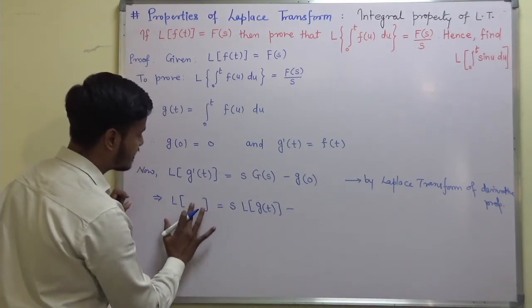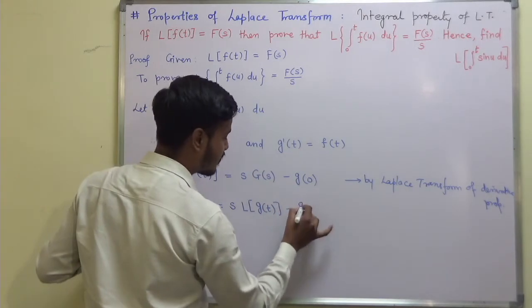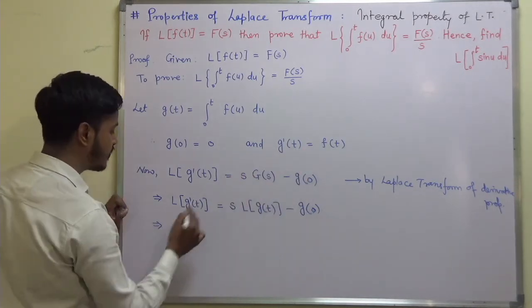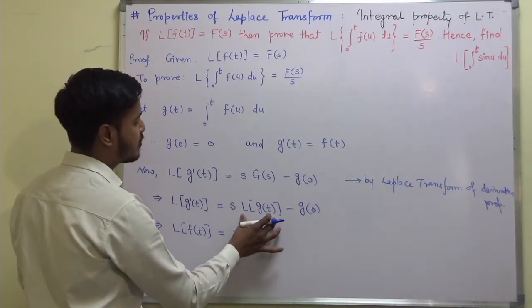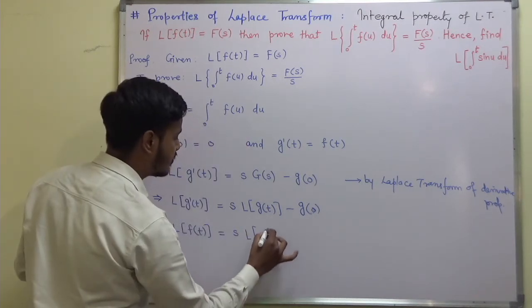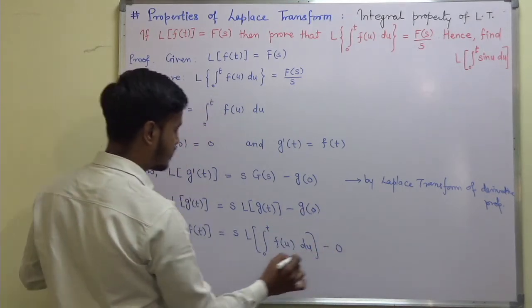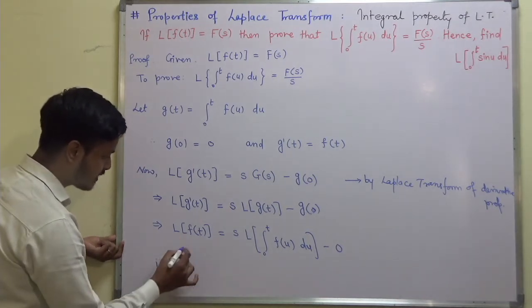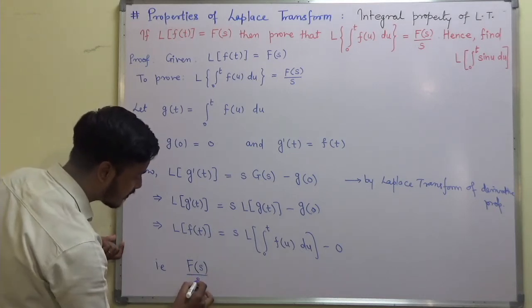So the Laplace transform of g'(t) equals s·G(s) minus g(0). Since g'(t) = f(t), this means the Laplace transform of f(t) is equal to s times the Laplace transform of g(t). Substituting G(s) as the Laplace transform of g(t) and noting g(0) = 0, we get: F(s) = s · L{g(t)}, which is s · L{∫₀ᵗ f(u)du}.